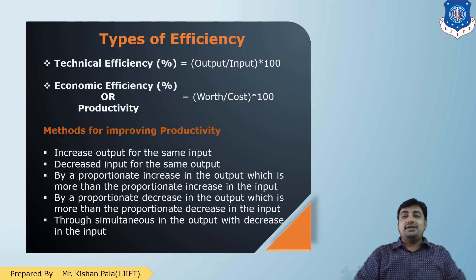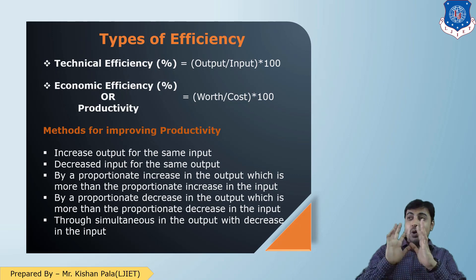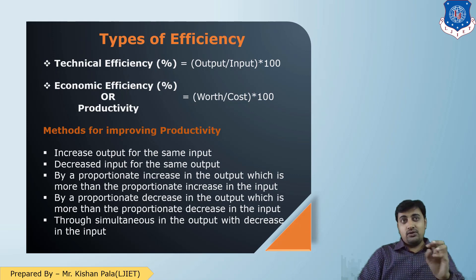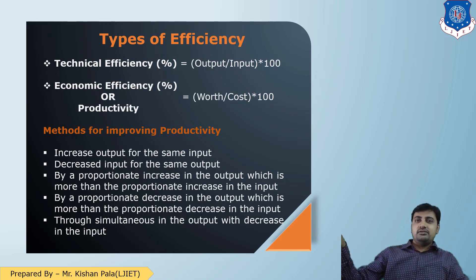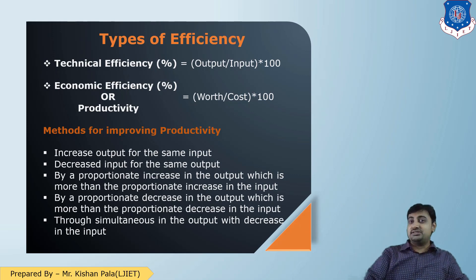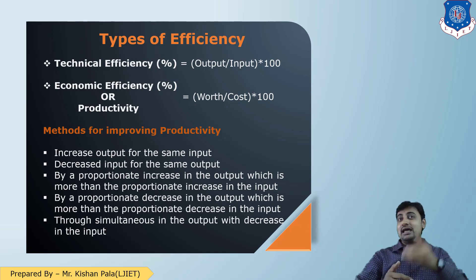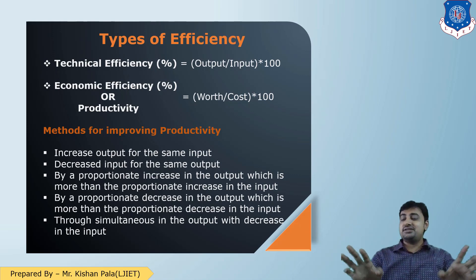Now let us move to the types of efficiency. As we have learned before, there are many types of efficiency, mainly focused on the physical. Technical efficiency is only focused on how much output versus how much input — this is physical efficiency. We can calculate it as output divided by input multiplied by 100.